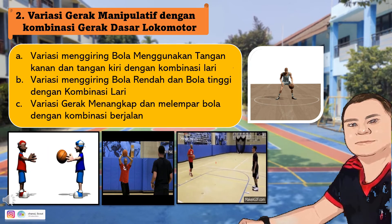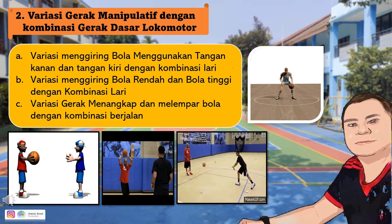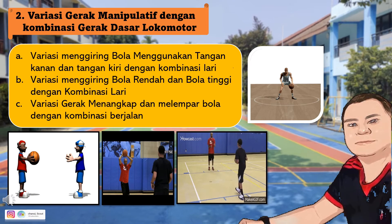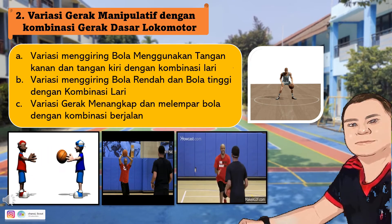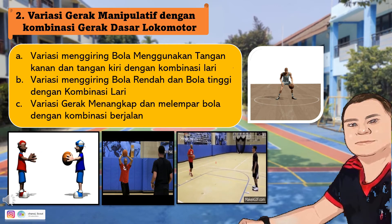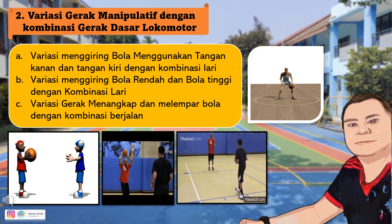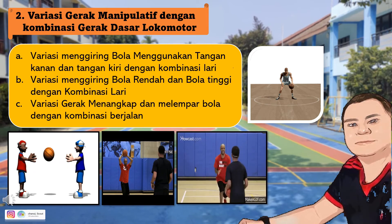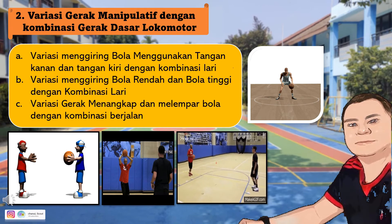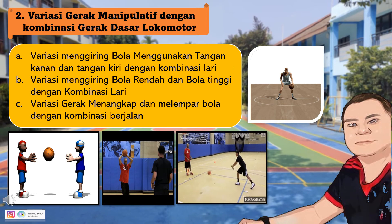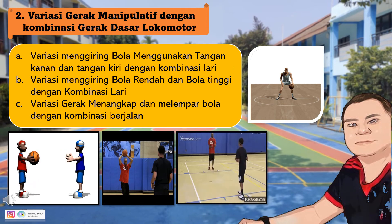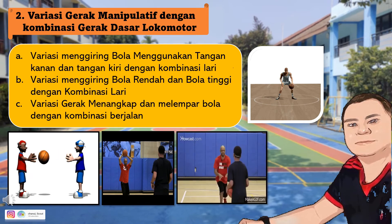Tangan mana yang sering kalian gunakan untuk menggiring bola? Menggiring bola dapat dilakukan dengan tangan kiri maupun tangan kanan. Agar dapat menggiring bola dengan baik, kamu perlu mengkombinasikannya dengan berlari atau men-dribble bola. Yang B: variasi menggiring bola rendah dan bola tinggi dengan kombinasi lari. Menggiring bola tinggi berarti ketinggian bola di atas pinggang, sementara menggiring bola rendah berarti ketinggian bola di bawah pinggang.